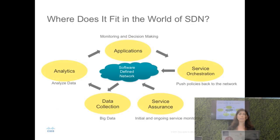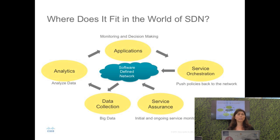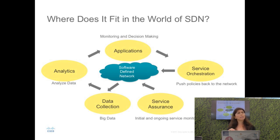It's important to note where this work fits in the world of software defined networking. SDN has five major components. The first is data collection — if you're going to program your network, you need to know how it's behaving before you can change that behavior. Then you sift through the data and make it available to applications, which are at the heart of SDN. They monitor and make decisions, generating policies for an orchestrator which pushes them back to reconfigure the network. The work we're doing with analytics fits into the data collection and analytics component of SDN.